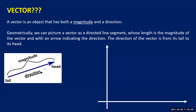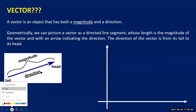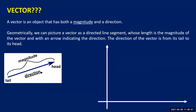That's how we normally represent a vector. When you are given a vector in two-dimensional space, we usually represent a vector as something like a-bar equals xi plus yj — a two-dimensional vector. If it is something like 2i plus 3j, it's a vector.